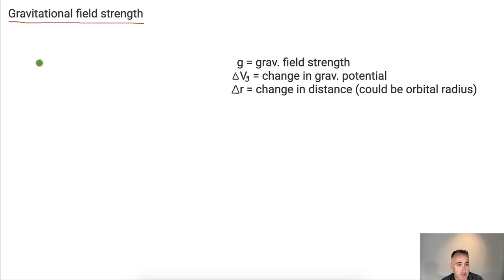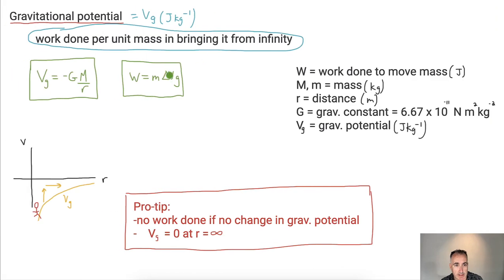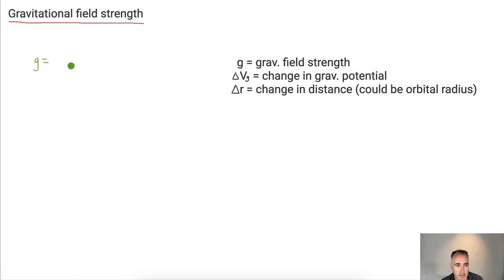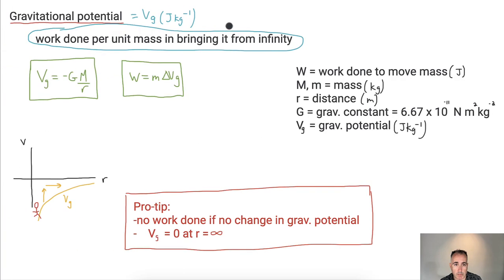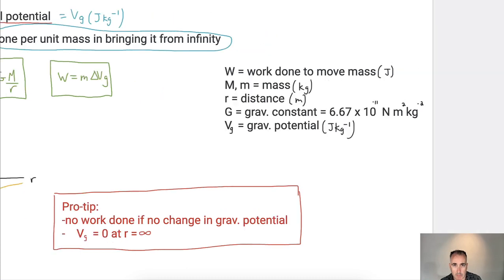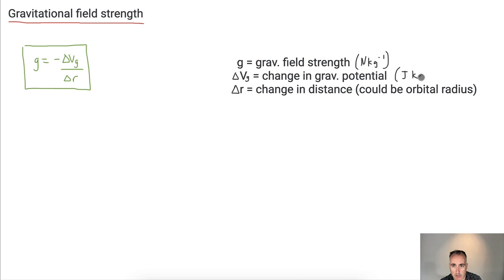We also have an equation for gravitational field strength, lowercase g, that relates it to gravitational potential. It's g equals negative delta V-G over delta R. The units for gravitational field strength are newtons per kilogram. The change in gravitational potential is in joules per kilogram, and change in distance is in meters.